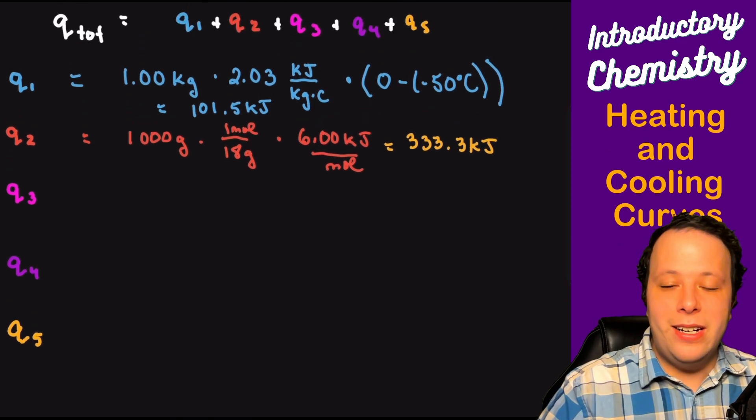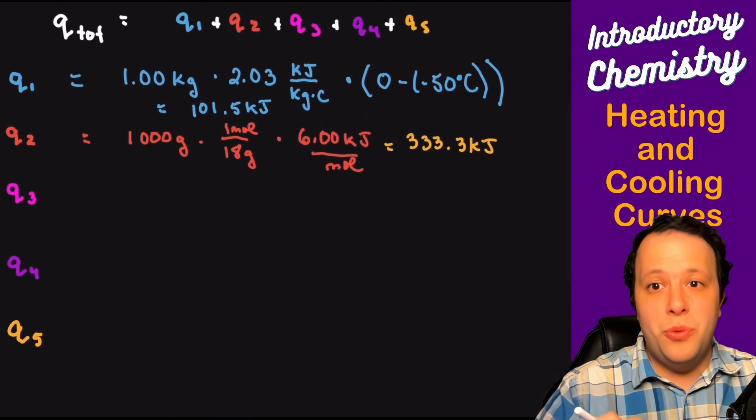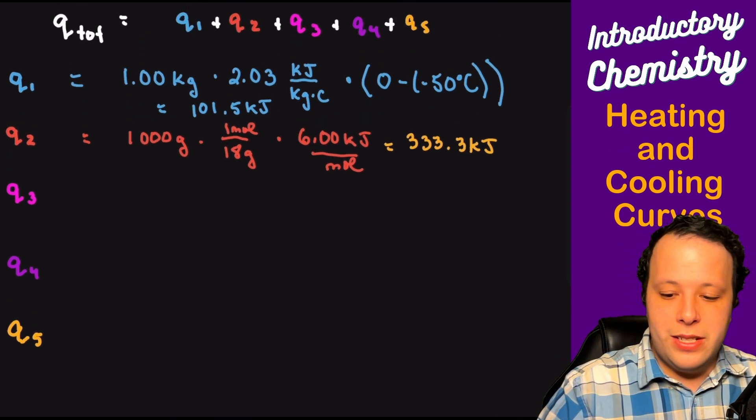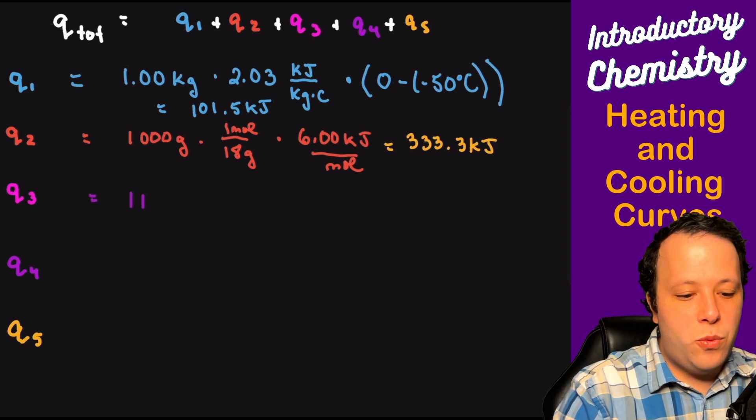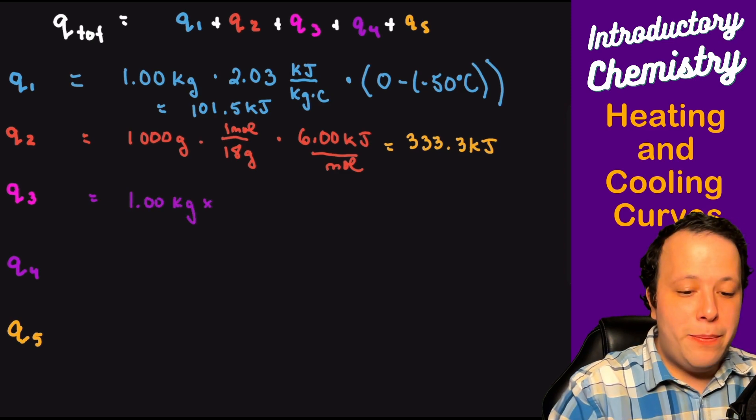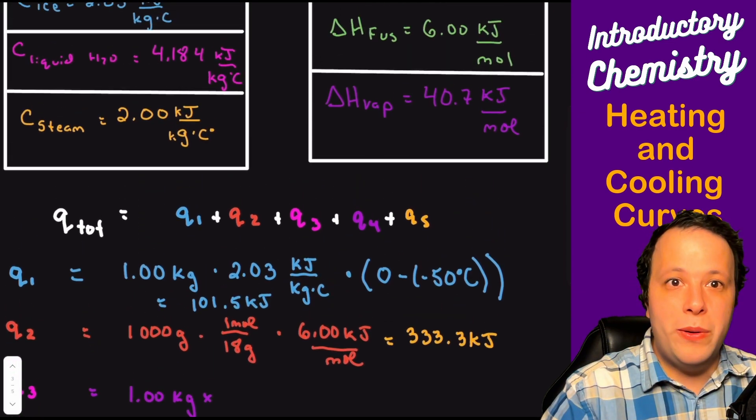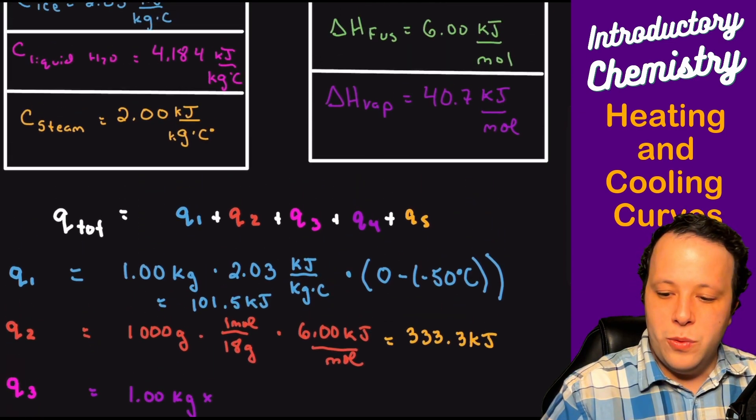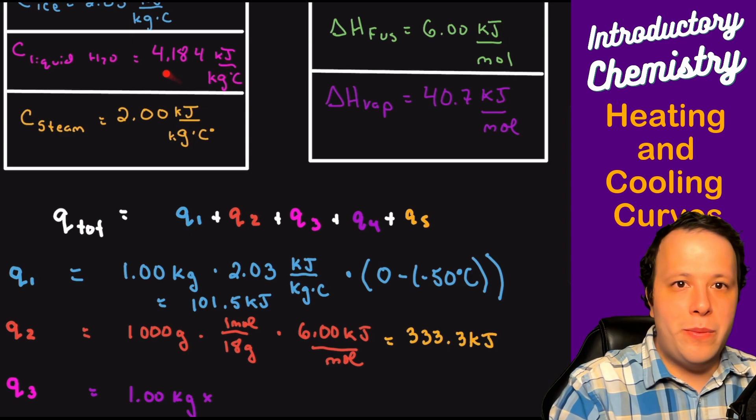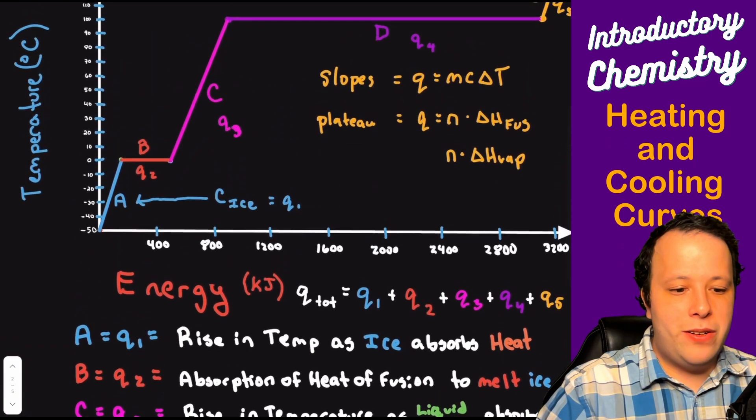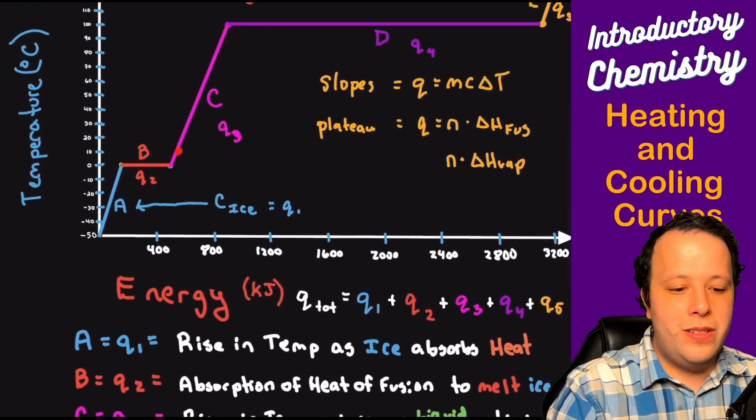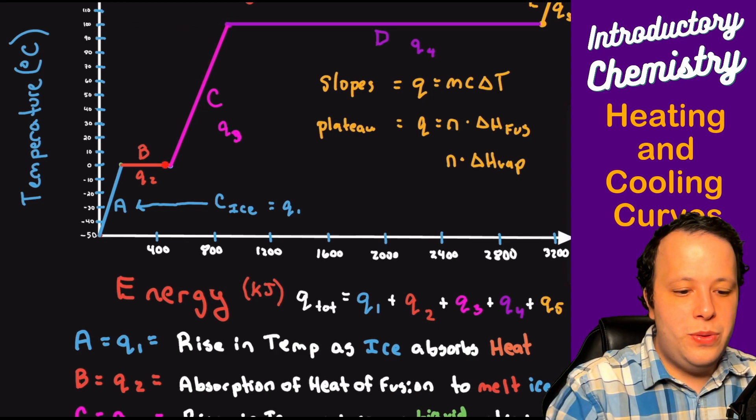The next part, Q3, is heating up again, this is going from zero to 100 degrees. So when we are doing that, once again we have our one kilogram, the 1.00 kilograms, we're going to times that by C of water, which is 4.184. So where are we looking for that value? That's coming from right here. We're on the liquid portion of the slope. So we did the plateau. Now we're going from here to here. So it's 100 to zero.